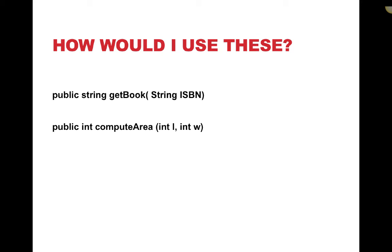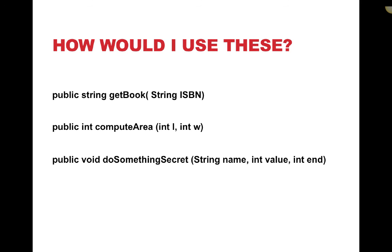public int computeArea(int l, int w) — so I know it takes two parameters, it's called computeArea, and whenever I'm ready to use this method I've got to pass in two int values and I'll receive an int after it's done running. The method doSomethingSecret takes in three parameters — a string and two ints — and doesn't return anything. It simply does something and then returns control back to the main method.